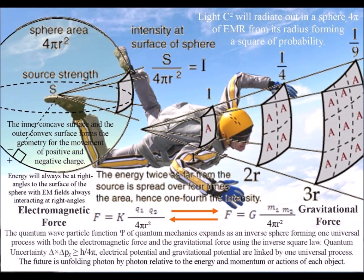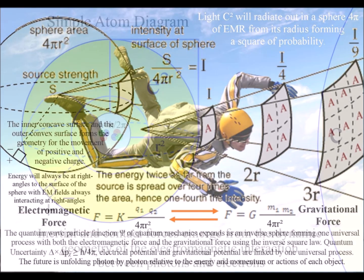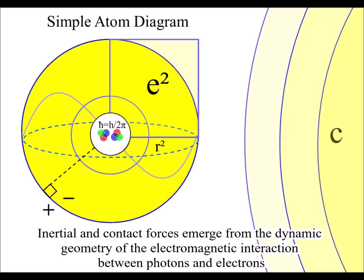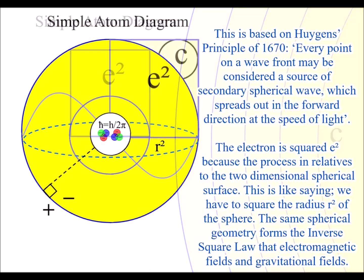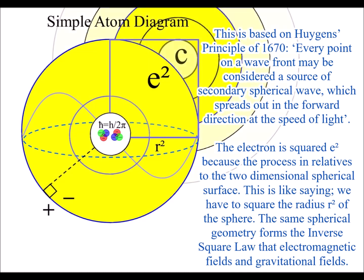Also, both gravitational fields and electromagnetic fields share the inverse square law representing the same spherical geometry. Spherical geometry naturally forms the inverse square law. We have to square the radius because the process unfolds relative to the curvature of the surface.